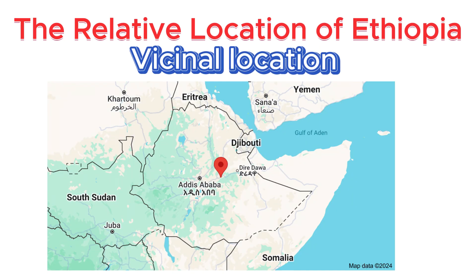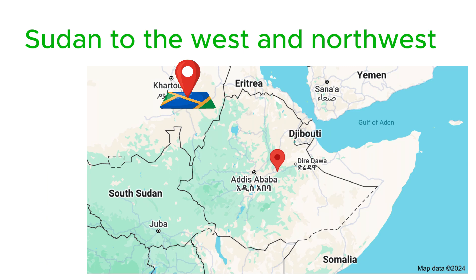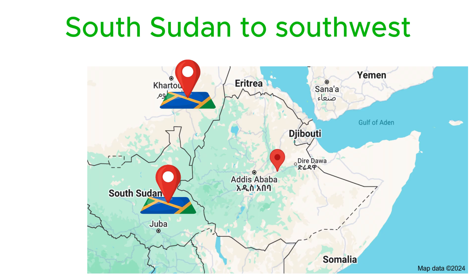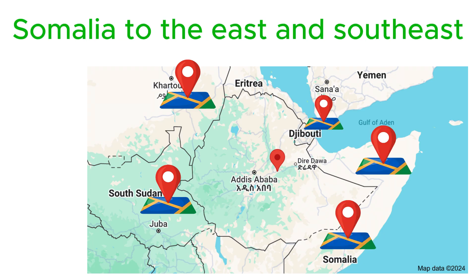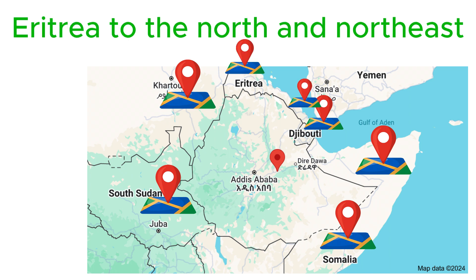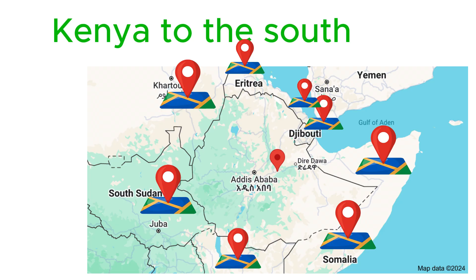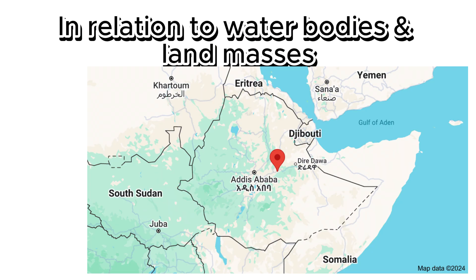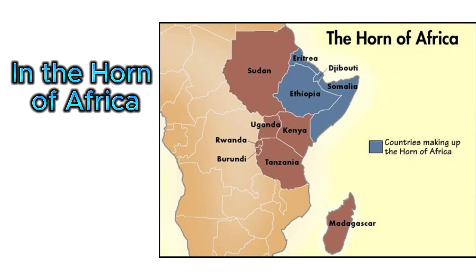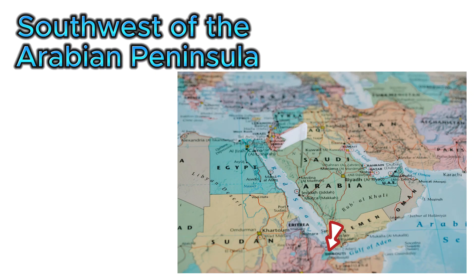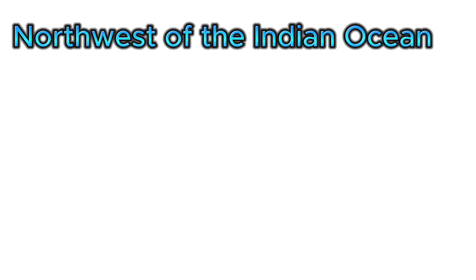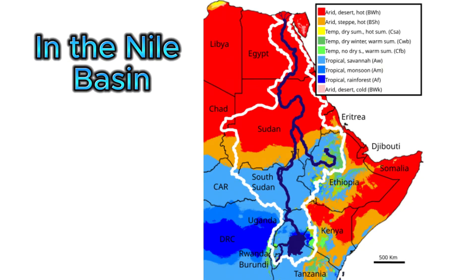Ethiopia is a landlocked country surrounded by six neighboring countries, each sharing different lengths of Ethiopia's boundaries. Sudan lies to the west and north-west; South Sudan to the south-west; Djibouti to the east; Somalia to the east and south-east; Eritrea to the north and north-east; and Kenya to the south. Ethiopia is located in the Horn of Africa, south-west of the Arabian Peninsula, south of Europe, north-west of the Indian Ocean, and in the Nile Basin.